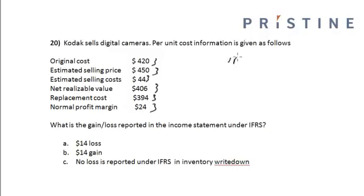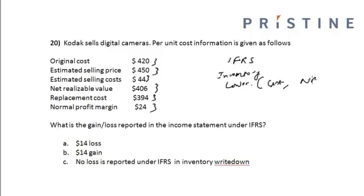Under IFRS, inventory is reported as the lower of cost or net realizable value. Here, the historical cost is equal to $420. The net realizable value is equal to selling price minus the cost associated with selling that product, which is equal to $406.